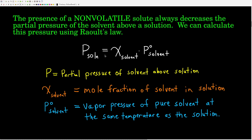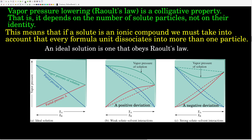Notice, by the way, this equation is in the form of a straight line, y = mx + b. If we were to graph the vapor pressure of the solution versus the mole fraction of the solvent, we would get a straight line with the slope being the vapor pressure of the pure solvent and the y-intercept being zero. So vapor pressure lowering is what Raoult's Law describes.